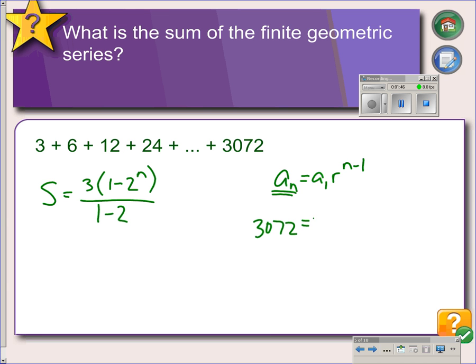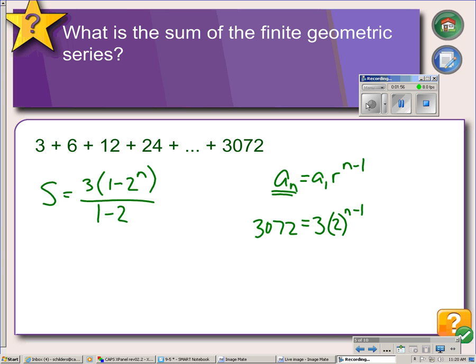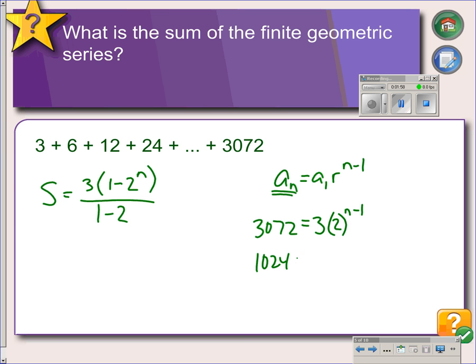So a sub 1 is 3, our common ratio is 2, and we're solving for n. So first thing we'll do is divide by 3. That gives us 1,024 equals 2 to the n minus 1. And now you have to go way back in your memory banks to figure out how to eliminate the 2 here so we can isolate the n.